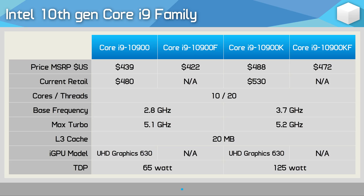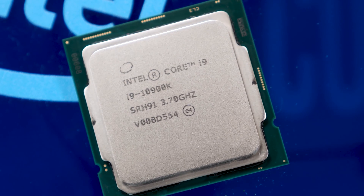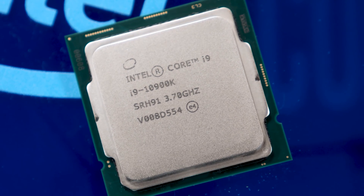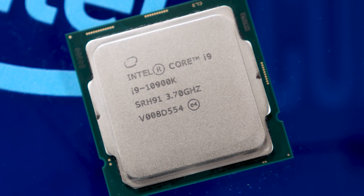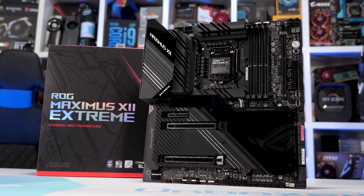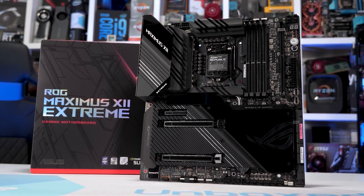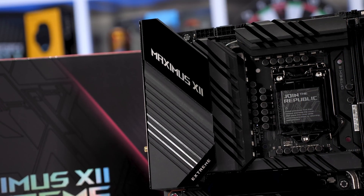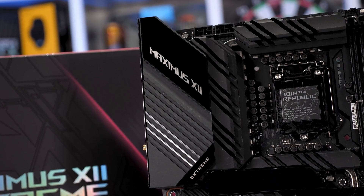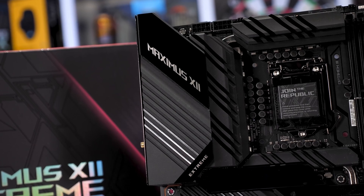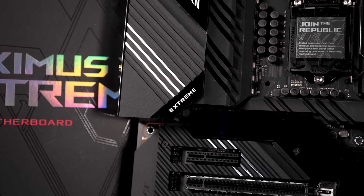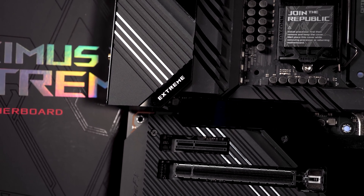Unfortunately, right now many of these 10th gen Core processors are either out of stock or selling well over the MSRP. It's a pretty rough time for supply anyway, and on top of that, Intel is suffering from their 14nm shortages, which seem to have been going on for years. Getting your hands on a Core i9 10900K right now is nearly impossible, and good luck getting one for anywhere near $500 US.